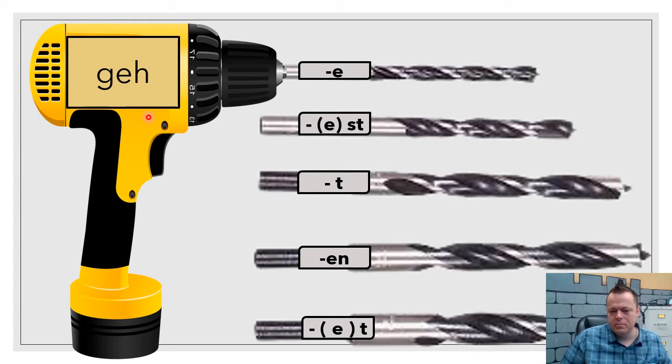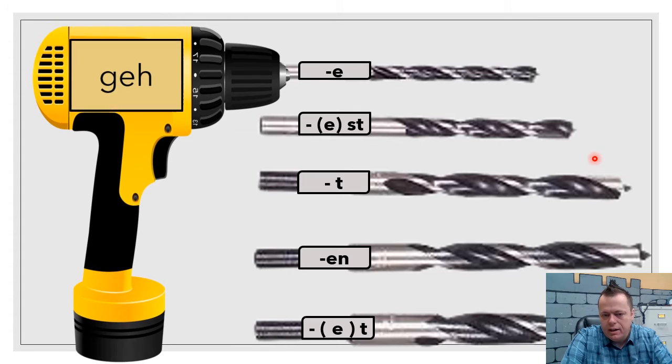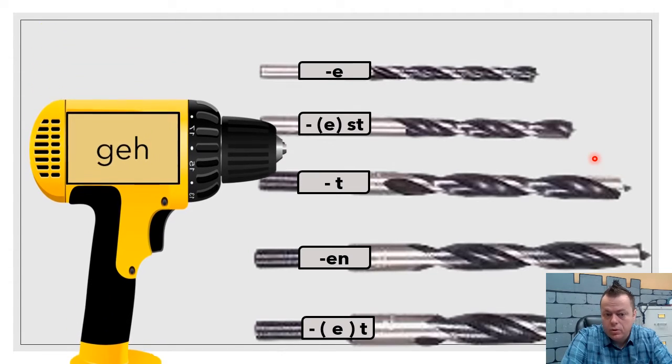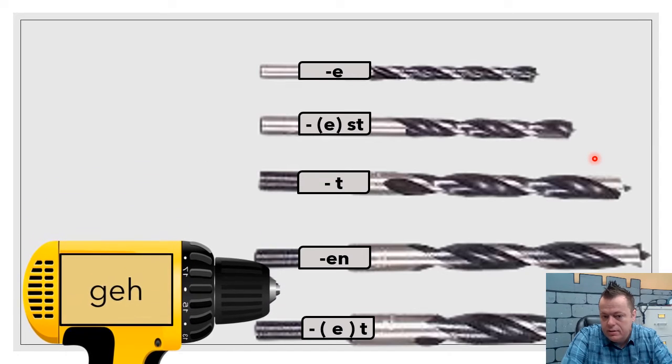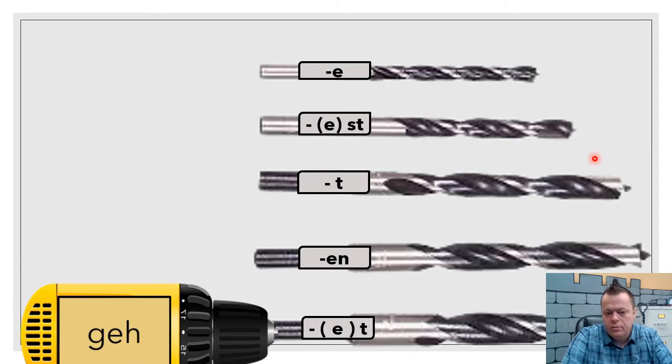What we have is a drill, and the drill represents the word gehen. But it's only the stem of the verb. Geh is the stem or the root, and then all these drill bits are like the endings. Sometimes you need a bigger drill bit or a smaller drill bit. So gehen: ich gehe, du gehst, er geht, wir gehen, ihr geht. Either way, it's still using that same root or stem, geh. So just kind of a way to think about that.